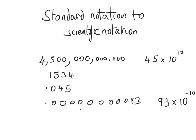Scientific notation is a shorthand way of representing very large and very small numbers. For example, four and a half trillion is a rather large number and can be represented with scientific notation — a much smaller, more convenient form. Even a small decimal number can be represented in scientific notation as 9.3 times 10 to the power of minus 10.